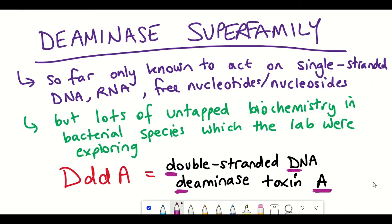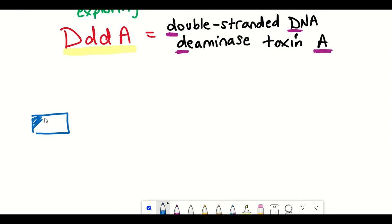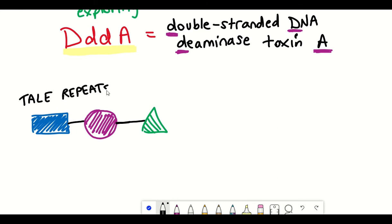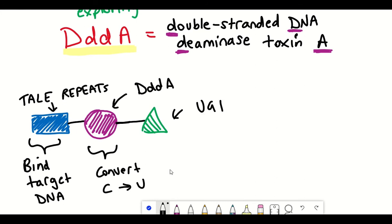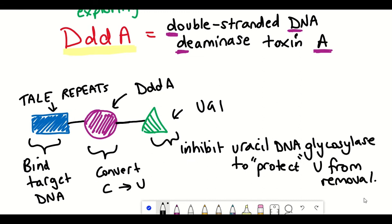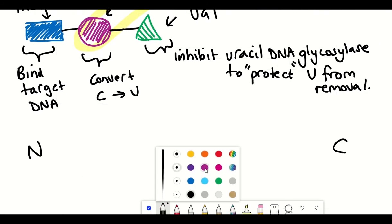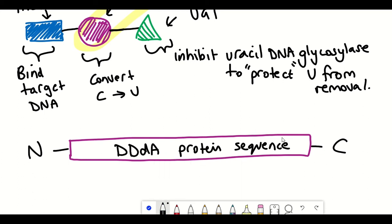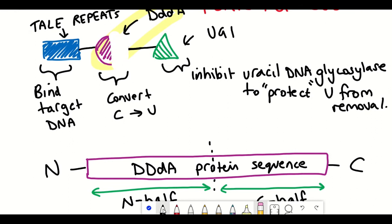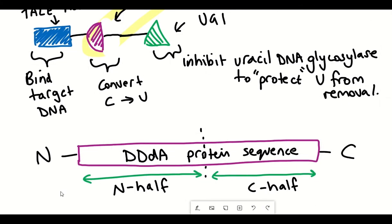So taking this DddA and fusing it with the TALEN system, so that's fusing it to these TAL repeat arrays that recognize specific DNA sequences, in addition to also adding this uracil DNA glycosylase inhibitor, the team were on to developing a CRISPR-free mitochondrial-based editing system. However, as hinted in DddA's name, toxin, adding this full DddA protein into human cell lines was actually toxic for the cells. So to circumvent this, the team designed a way to split up the sequence of DddA into two halves, an N-terminal half and a C-terminal half, and fuse them separately to different TAL arrays along with these uracil DNA glycosylase inhibitors.